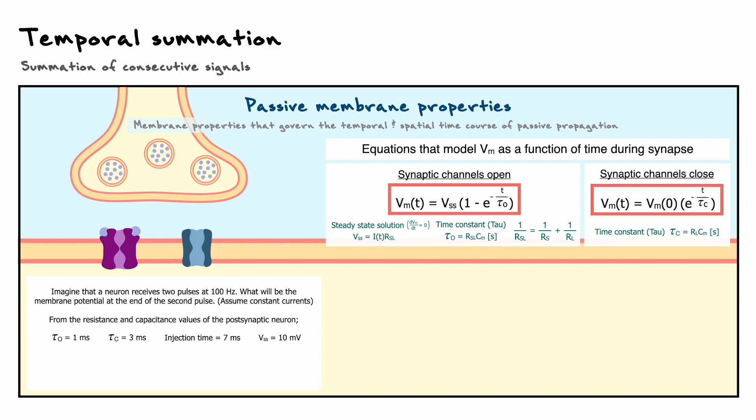To better visualize what's going on, let's also plot the membrane potential and the synaptic current as a function of time. Ok, so to solve this problem, I suggest to first understand when the synapse is active or not based on the frequency and the injection time. As a side note, the use of frequency to describe temporal dynamics in neurons happens very often. As a reminder, frequency, which is measured in Hz, corresponds to the inverse of the time interval between each pulse.